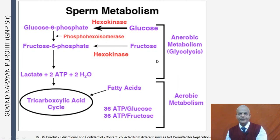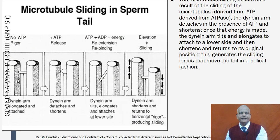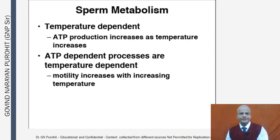Microtubule sliding in the sperm tail occurs as a result of ATP derived from ATPase activity. The dynein arm attaches and detaches in the presence of ATP, shortening once energy is available, then tilts and elongates to attach at a lower site, then shortens and returns to its original position. This generates sliding forces that move the tail in a helical direction.